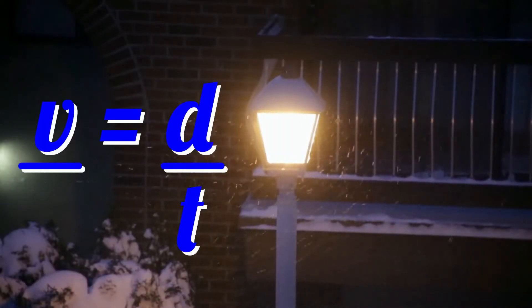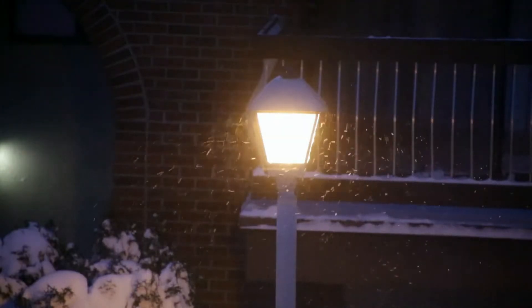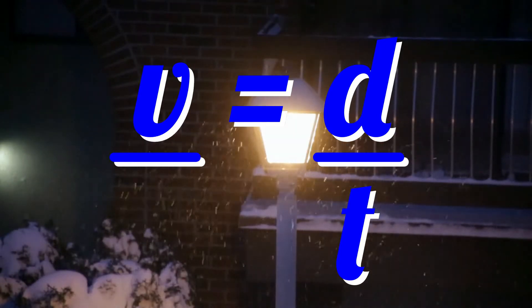V equals D over T and P equals E over T. Velocity in meters per second equals distance in meters divided by time in seconds. Please note we calculate speed in the exact same way.